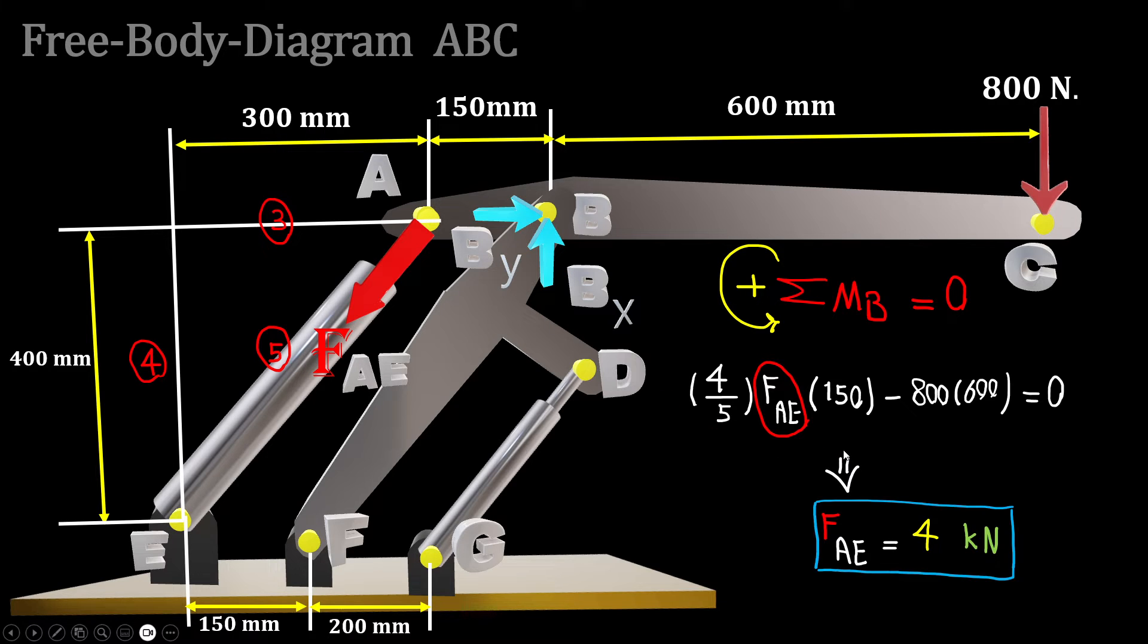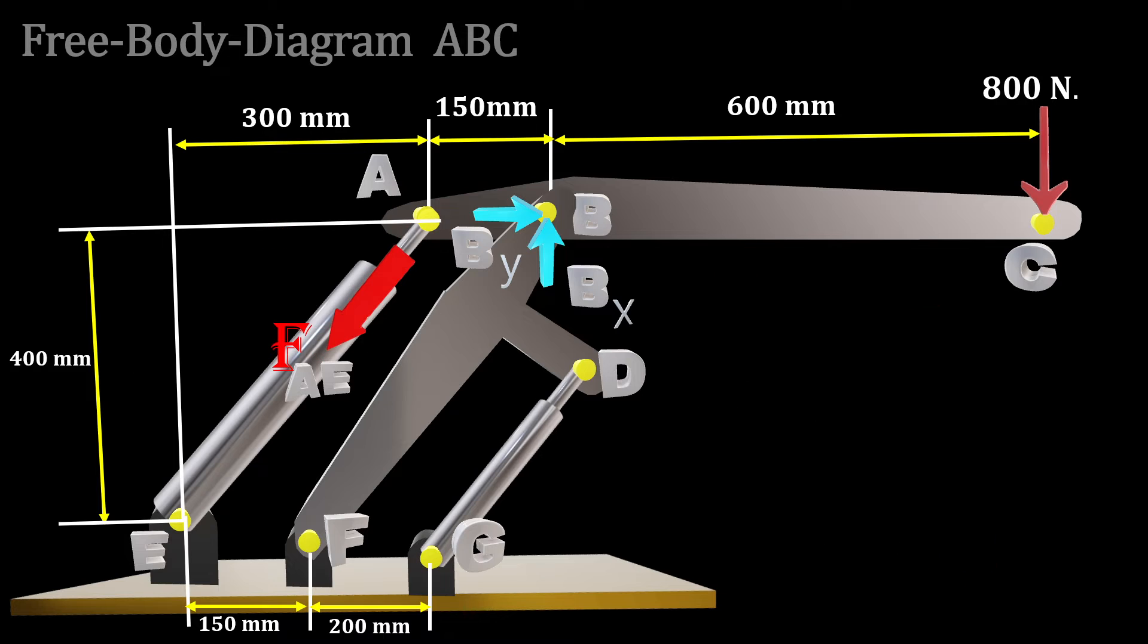This gives us the force at AE is equal to 4 kilonewtons or 4000 Newtons.